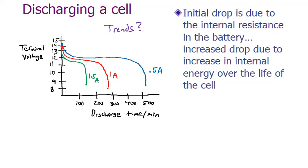The increased drop is due to the increase in internal energy over the life of the cell. Over that life of the cell, there's going to be more and more internal resistance, which is going to affect the current.